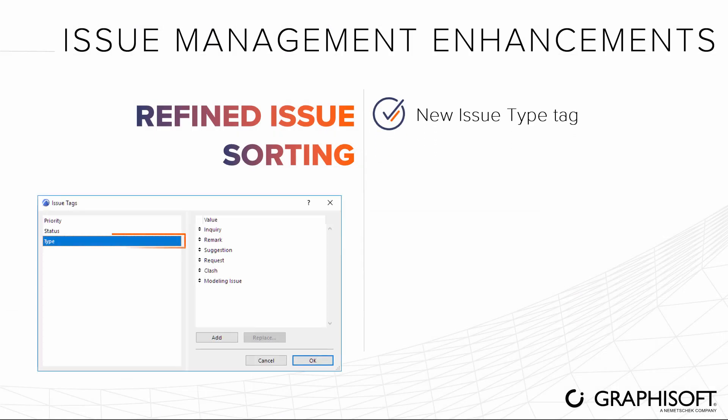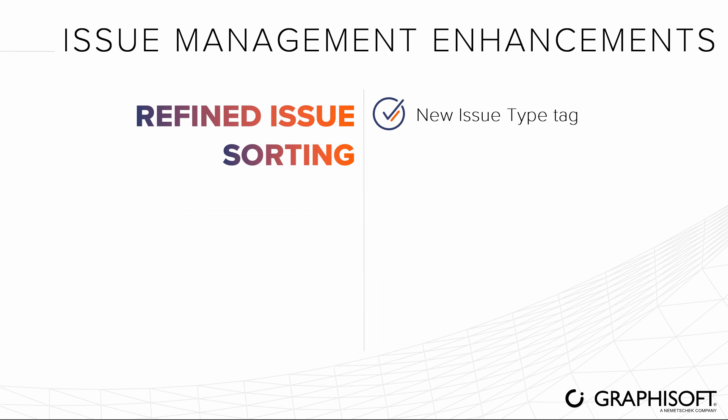Categorize your issues by type for more sophisticated issue classification and sorting. The type tag is compatible with BCF 2.1 and can be defined and applied similarly to the existing priority and status tags.